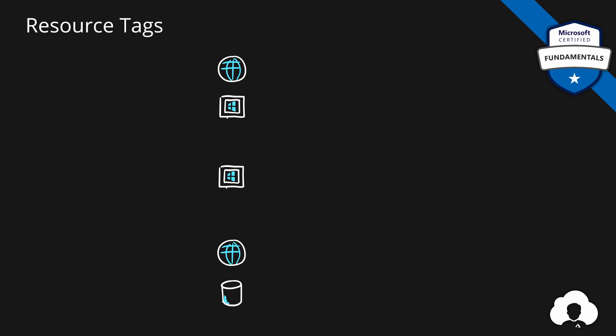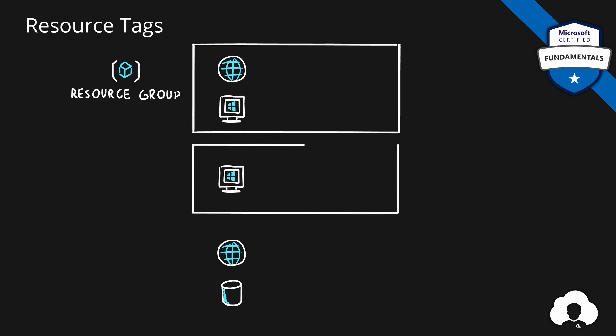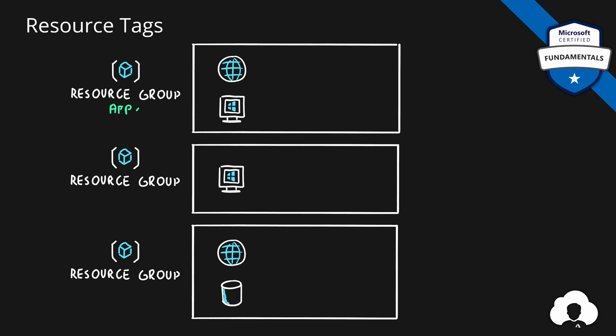We all know that in Azure you can place your resources into resource groups and the typical approach is to group your Azure resources by the name of the applications that you're building. So all the resources that are components of your application will be in the same resource group. This approach is very popular because it allows you to build your application more efficiently. There is one caveat about this approach: if you want to group your Azure resources by something else other than your application name, you could implement a different resource group naming convention.